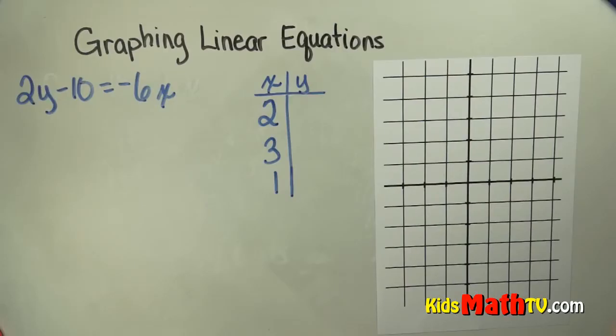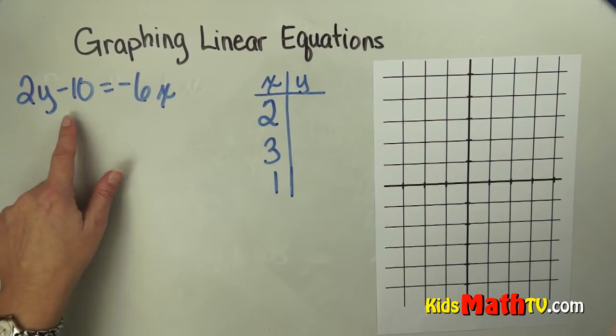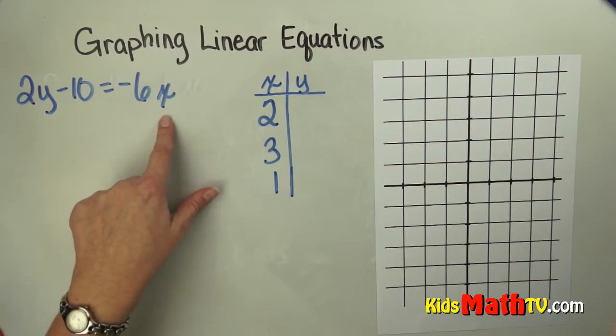In this lesson we will be learning about graphing linear equations. So here is my linear equation: 2 times y minus 10 equals negative 6 times x.